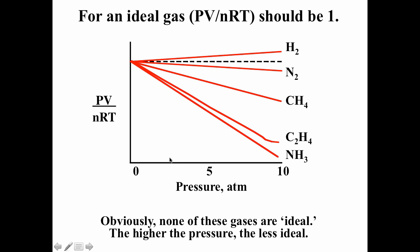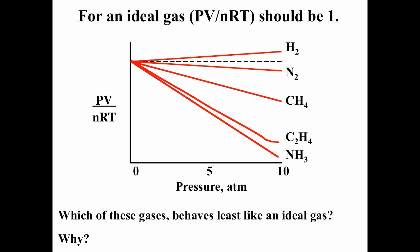This is a plot of PV over nRT versus pressure. The dashed line represents one. At low pressure, all these gases are behaving ideally — PV over nRT is equal to one. As you increase the pressure, the gases behave less ideally. An interesting question is which of these gases behaves least like an ideal gas — we're looking for the biggest deviation from the dashed line.